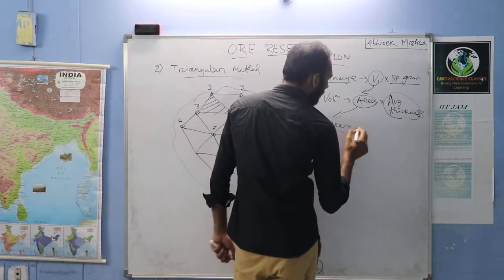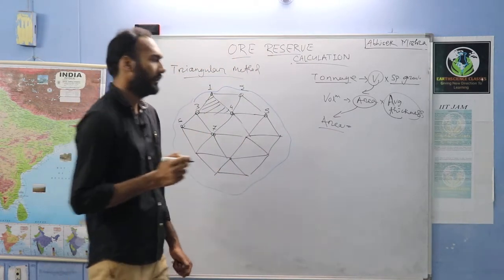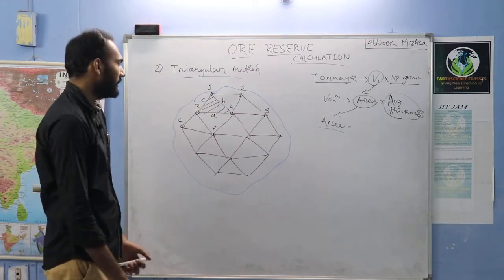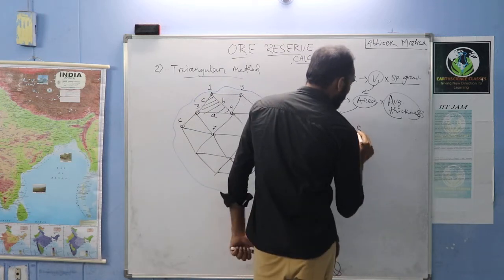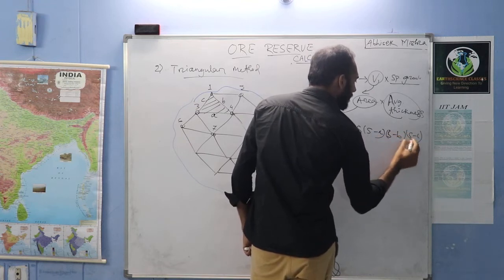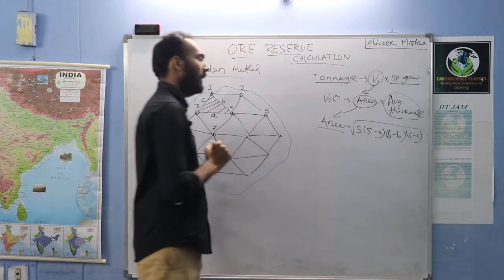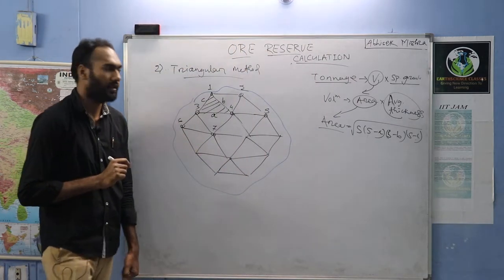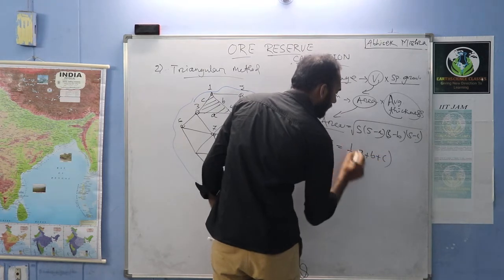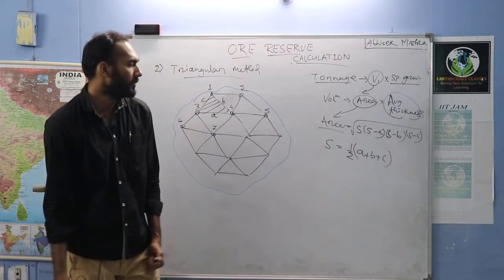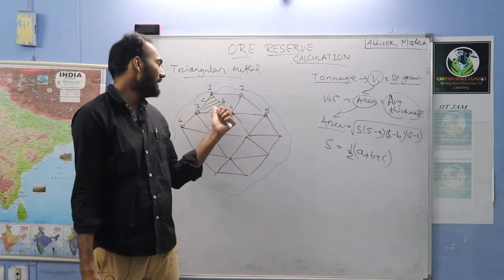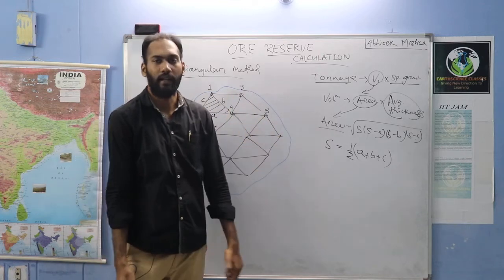Area of a triangle is calculated using Heron's formula: Area = √(s × (s−a) × (s−b) × (s−c)), where a, b, c are the sides of the triangle and s is the semi-perimeter: s = (a + b + c) / 2. You have to find the area for each triangular block.